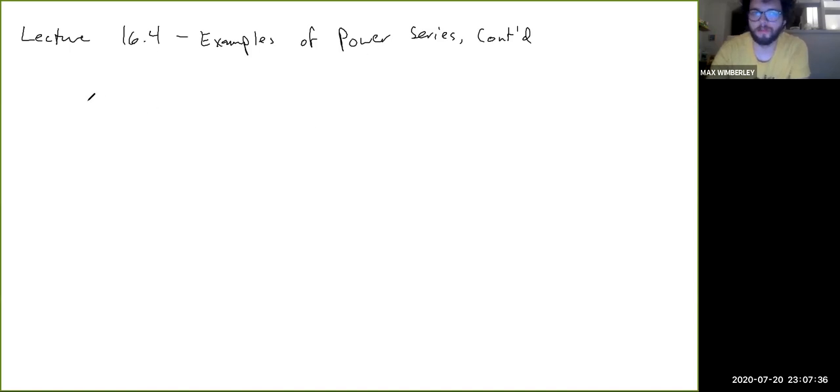Alright, so we're going to look at a couple more examples of power series. So the first one is going to be Example 6, which is the series of 2 to the minus n x to the 3n from n equals 0 to infinity.